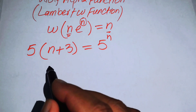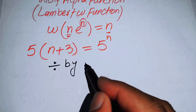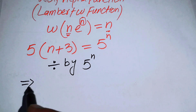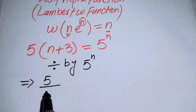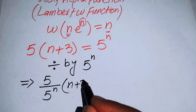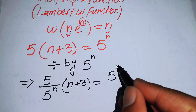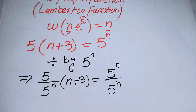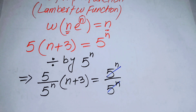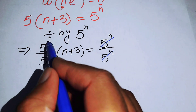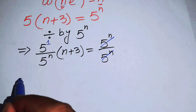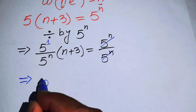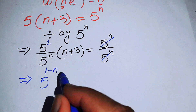In the next step, we divide both sides by 5 to the power of n. The right hand side cancels, and using the exponential law — since the bases are the same — the exponent n is subtracted by 1, giving us 5 to the power of 1 minus n times n plus 3 equals 1.